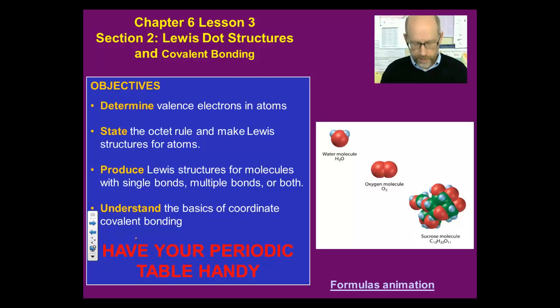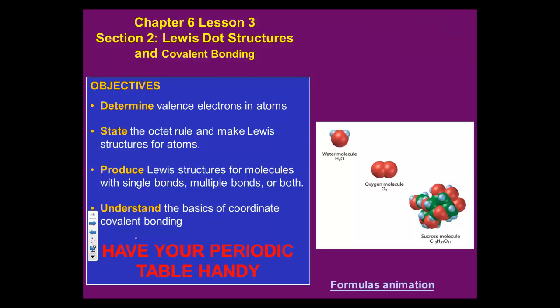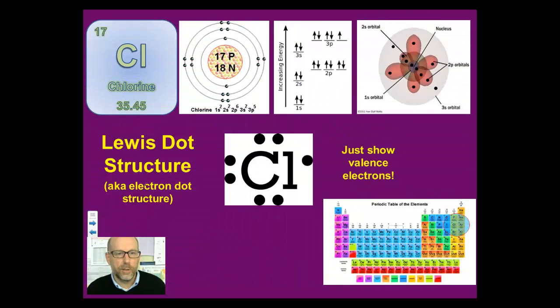Lewis dot structures or electron dot structures and how to make covalent bonds. Lewis dot structures, also known as electron dot structures, only show the valence electrons. So let me just circle back. They only show the valence electrons.